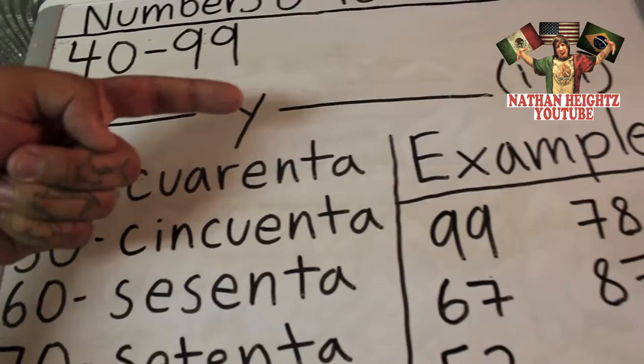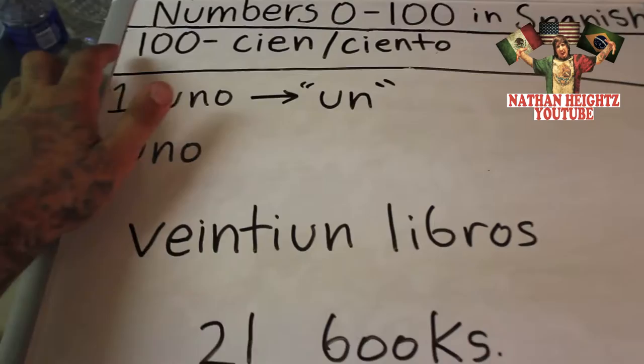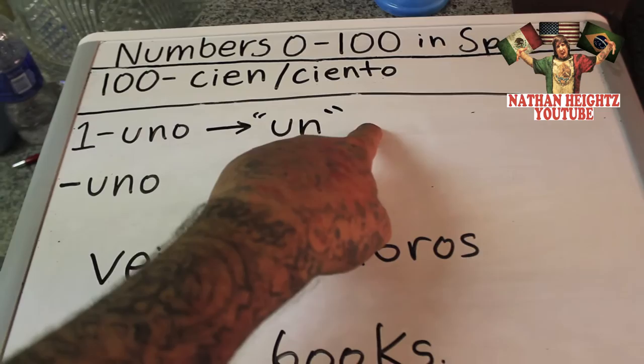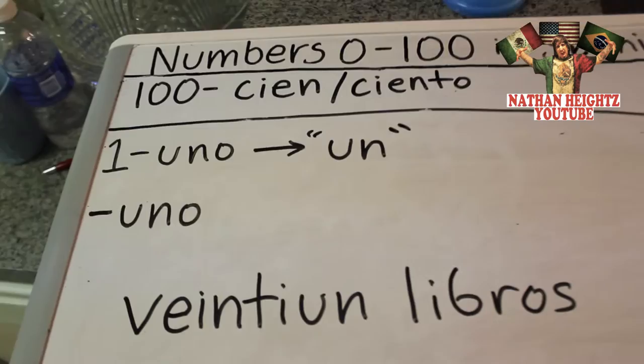And finally, after 99 we have the number 100, which is cien. There's also ciento, but we're not going to worry about that right now. When counting to 100 you will say cien. So let's say you're at 98, 99, and then 100.